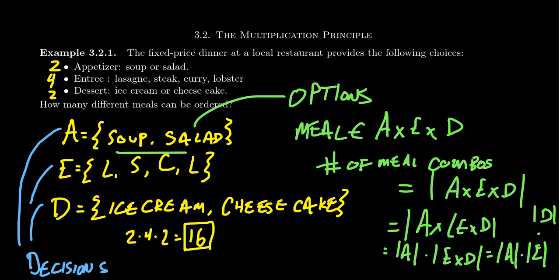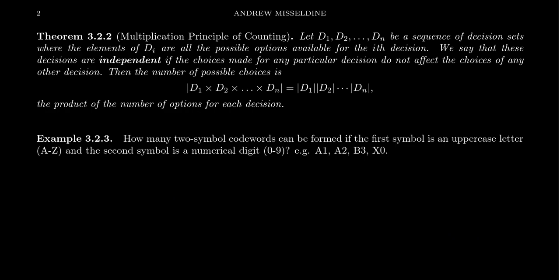This seems like overkill for an otherwise elementary problem, but the idea is to understand the principles at play so that when we look at much more difficult examples, we can apply those principles in an abstract setting. This fixed-price restaurant meal example illustrates the multiplicative principle of counting. Imagine we have a sequence of decision sets D₁, D₂, D₃ up to Dₙ, where Dᵢ is the i-th decision that has to be made.